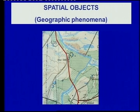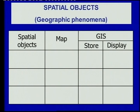I'm going to take three examples of spatial objects and show you a node or point symbol, a line symbol, and an area symbol — then show how each is depicted on a map, how the GIS stores it, and how it displays it.